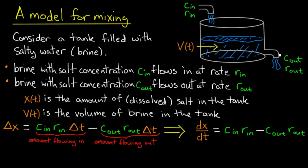On the other hand, maybe I can open and close the valve for this drain pipe going out. So maybe I get to control r_out. On the other hand, I have no control whatsoever over C_out. C_out is determined purely by the quantity of salt in the tank and the volume of the brine in the tank.